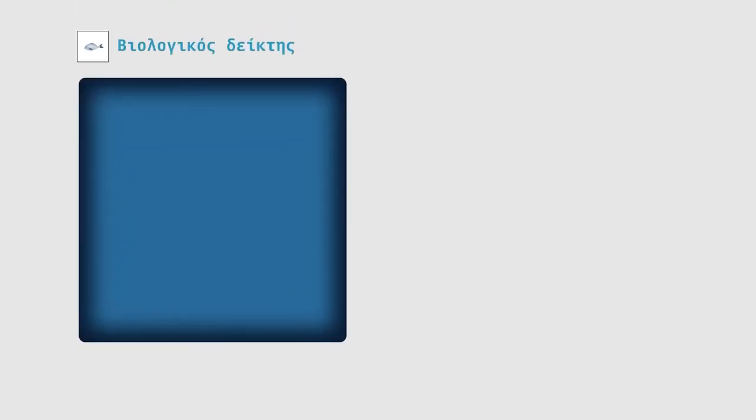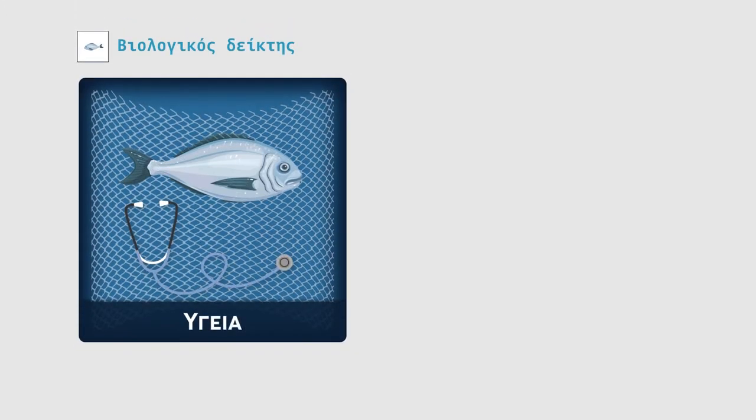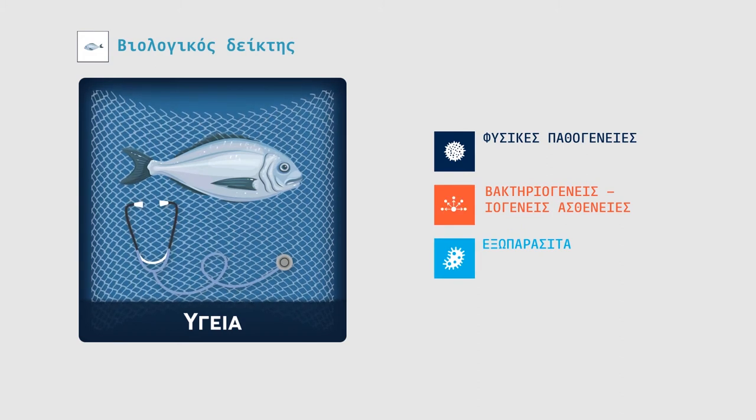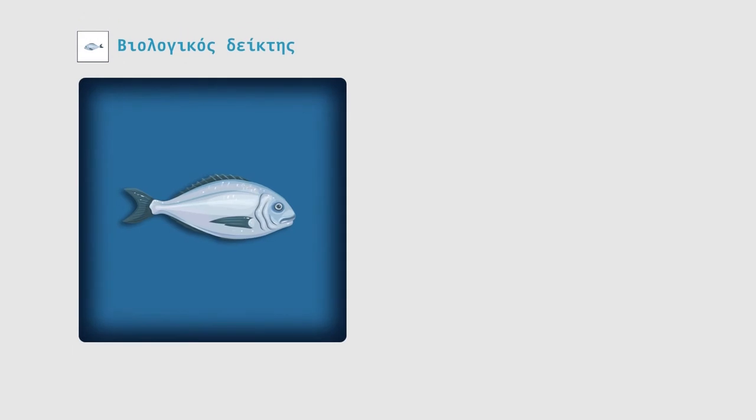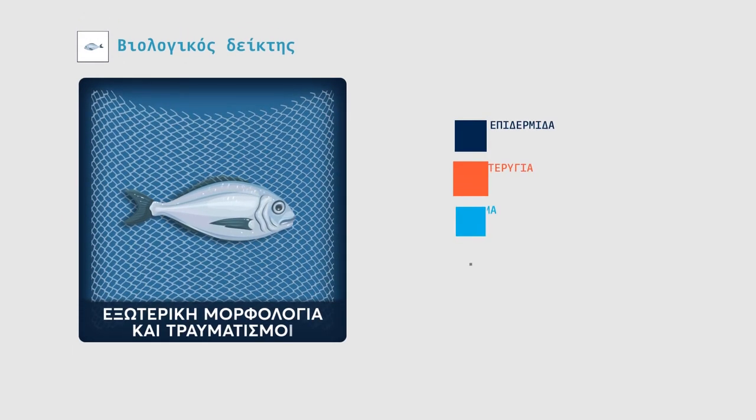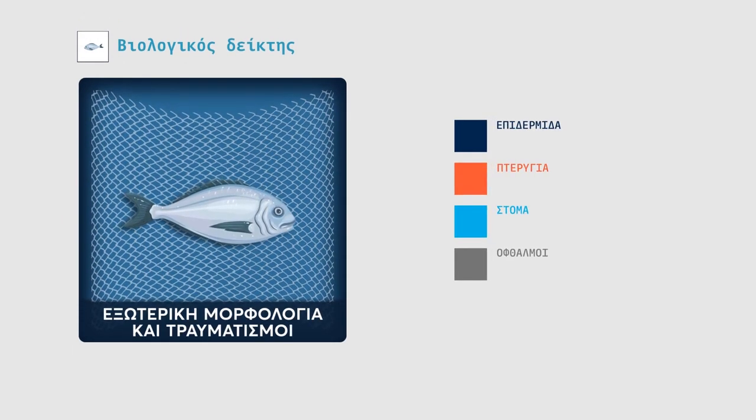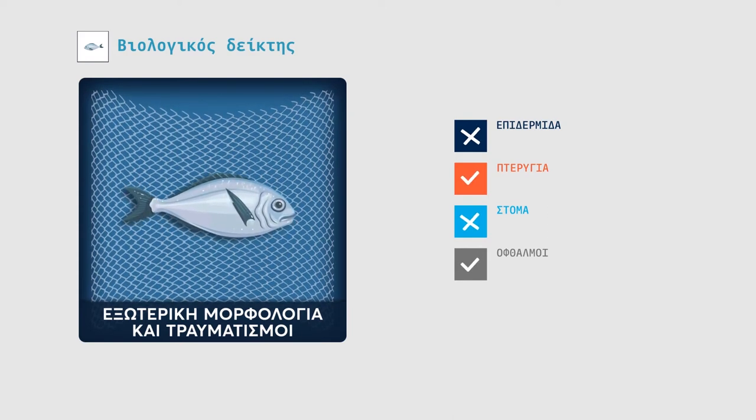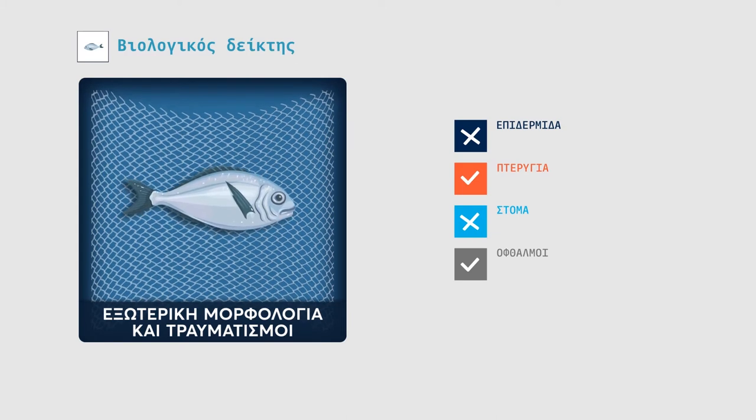The health indicator includes clinical cases such as natural pathogens, infectious diseases and ectoparasites. The exterior condition of the skin, fins and other structures such as the mouth and eyes are important indicators of welfare. Injuries can be recorded as present or absent.